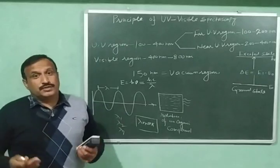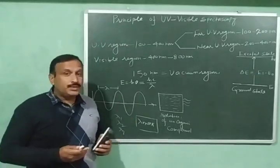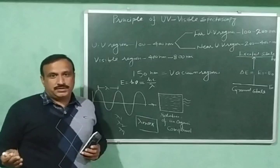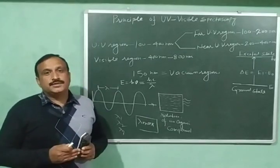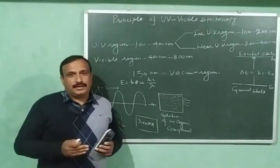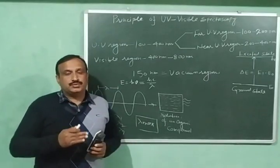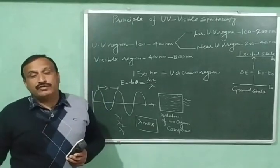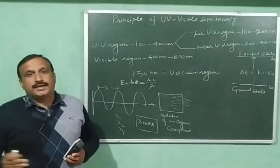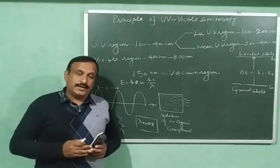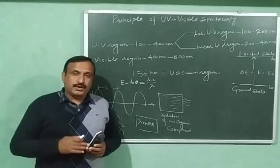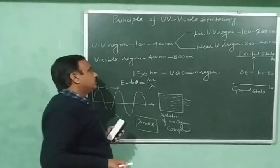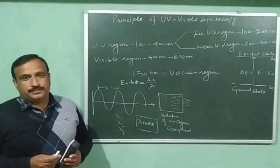So for measurements below 150nm we need an evacuated instrument — that is, the instrument must be free from any gas, there must be complete vacuum. Some vacuum techniques are also required in this case. That is why the region below 150nm is called the vacuum region.